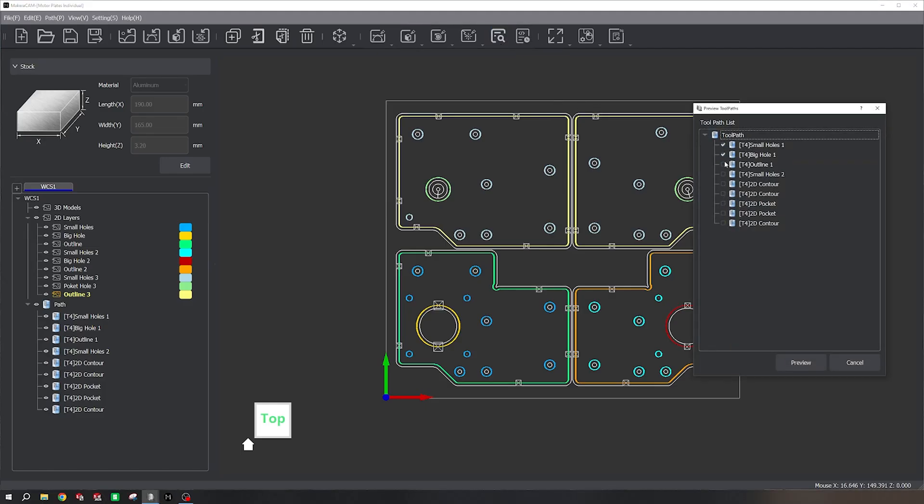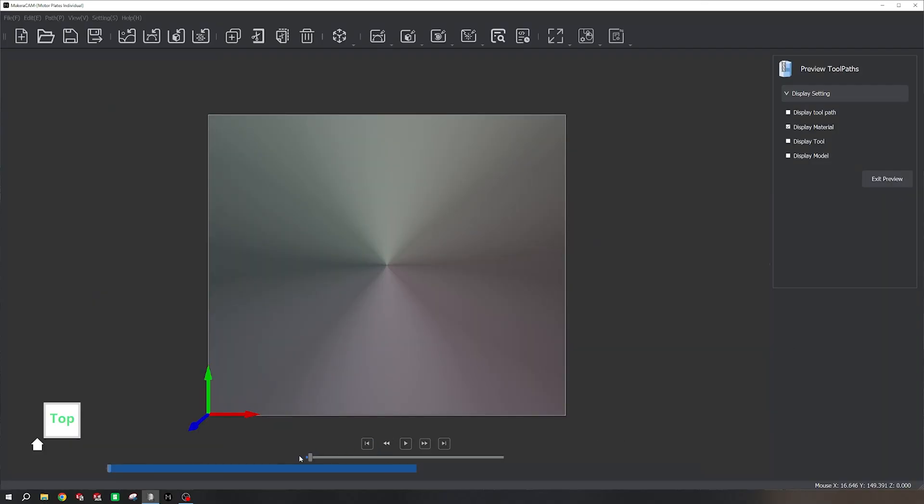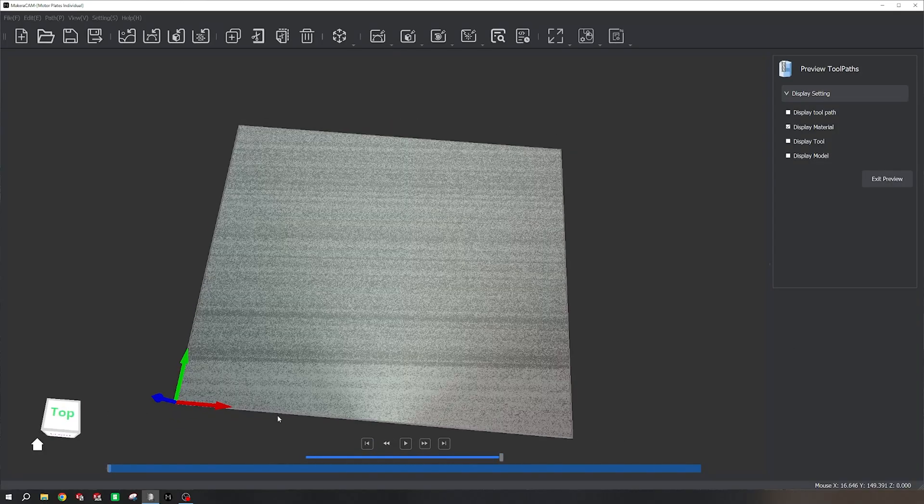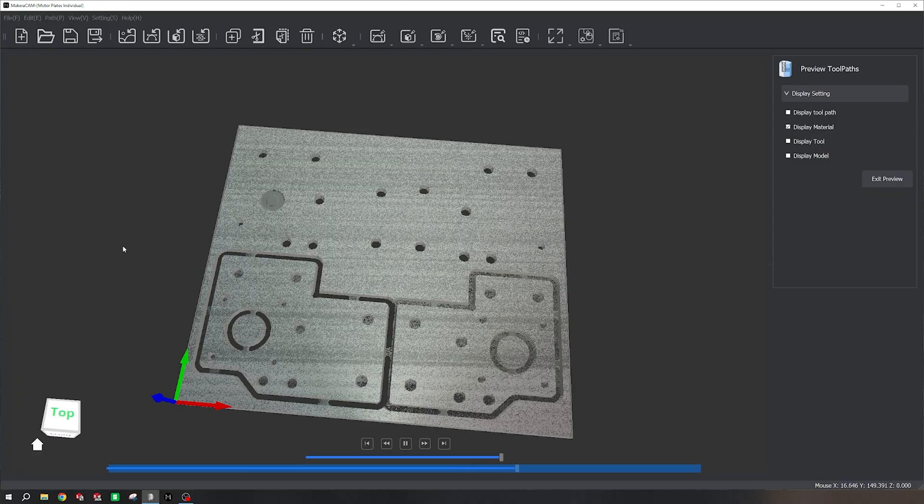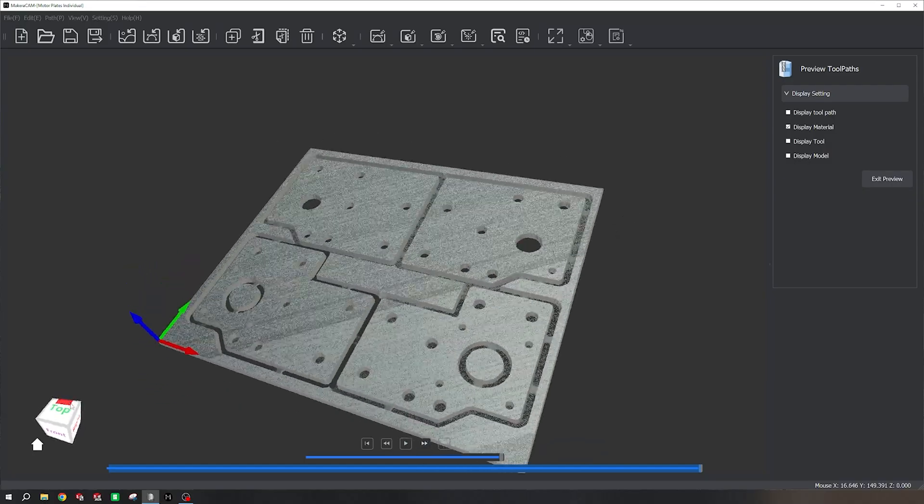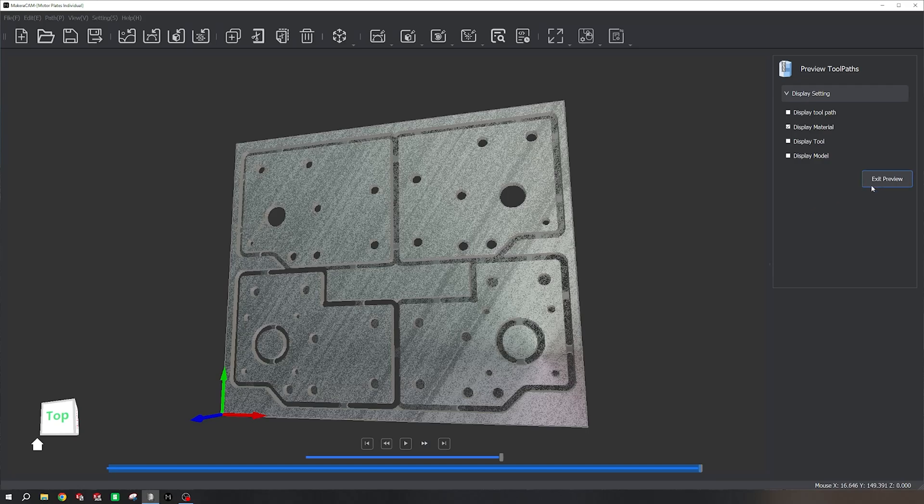So we're going to go over the preview of the CAM software here, just so you can get an idea of how it's all going to look. We just got to check all those, click preview, let it load, and speed it up as fast as possible. Put it on an angle so you can see what's going on. You'll see that we're going to start by cutting all the holes, and then doing the outlines for all the parts, then making all the pockets, and leaving some space to hold it all together. This is what the file is going to look like. Now all we've got to do is test it out.